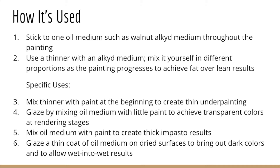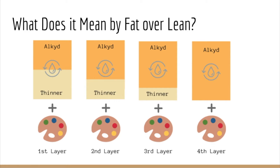So what does fat over lean mean, and how do you apply it? When we say add more oil, it doesn't mean pour more oil onto the paint. What this means is that as the painting progresses, the proportion of oil to thinner also increases. It's the proportion of oil to thinner — more oil makes it more fat, more body, dries faster, more glossy, and vice versa with less oil.